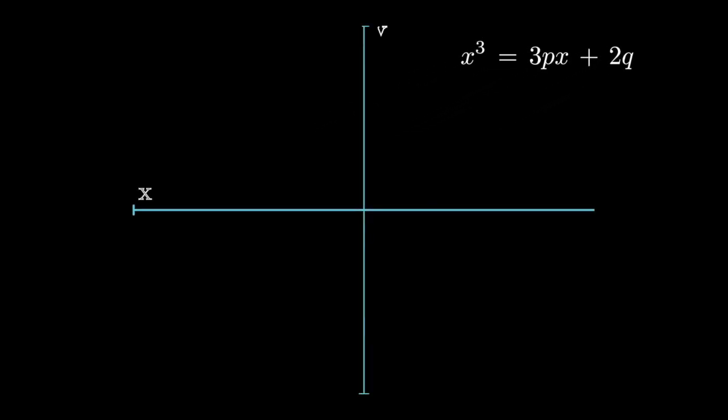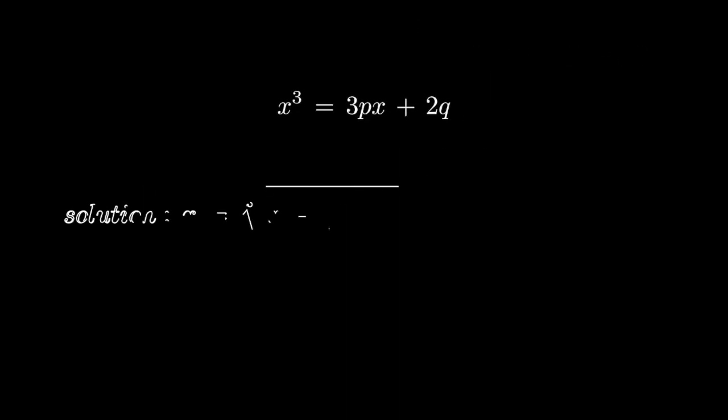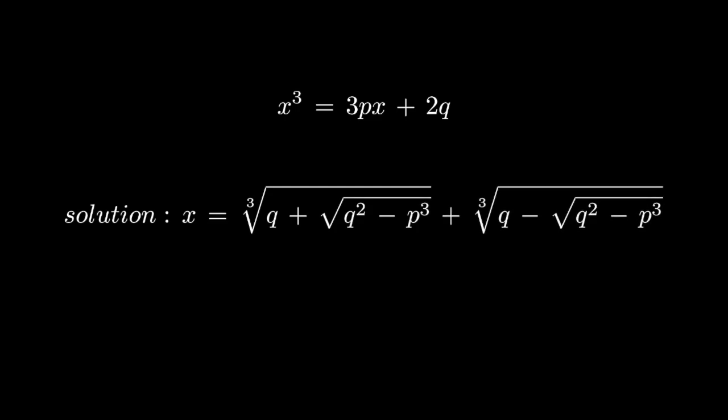This equation is basically saying that we need to find all points of intersection of a cubic and the line 3px plus 2q. Cardano produced a remarkable formula for finding the root of this equation.